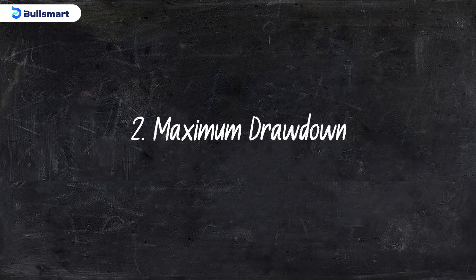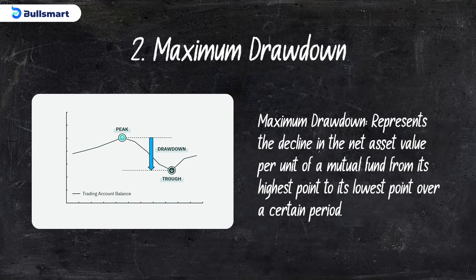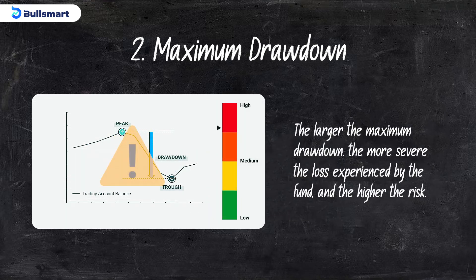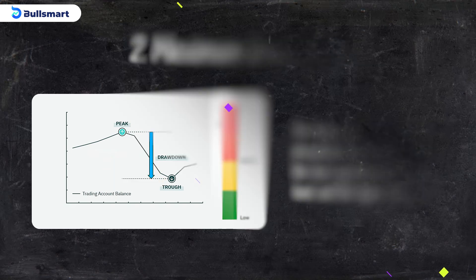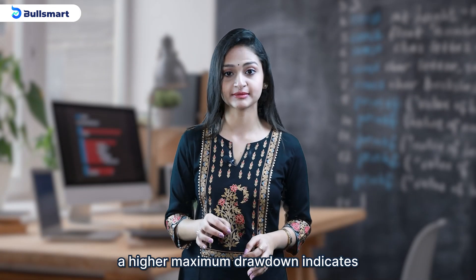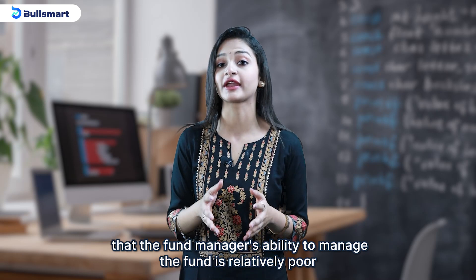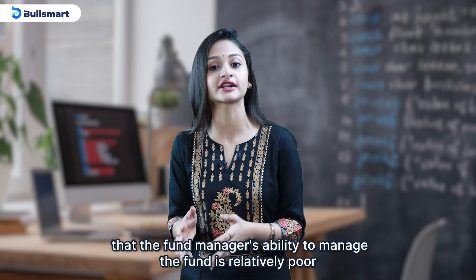Number two: the maximum drawdown. It represents a decline in the net asset value per unit of a mutual fund from its highest point to its lowest point over a certain period. The larger the maximum drawdown, the more severe the losses experienced by the fund and the higher the risk. At the same time, a higher maximum drawdown indicates that the fund manager's ability to manage the fund is relatively poor.